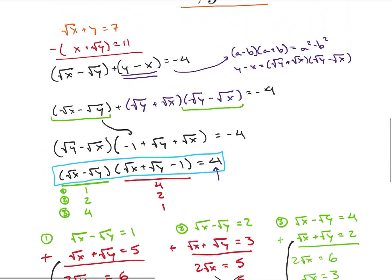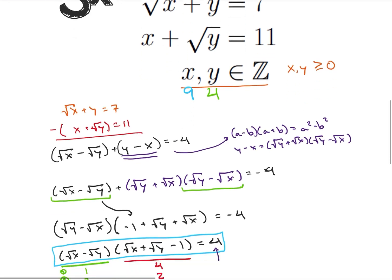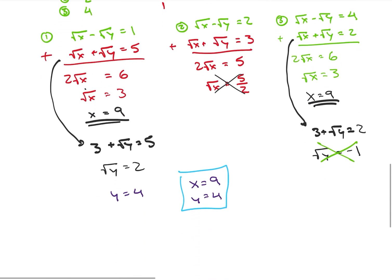Going back to our original equations and plugging in x equals 9 and y equals 4: square root of 9 is 3, plus 4 is 7. Check. And 9 plus the square root of 4, which is 2, is 11. Check. Some of you might have seen that right away, but I like to figure it out in a deliberate mathematical way. I hope you enjoyed working through this problem. Please like and subscribe, and if you have your own video idea, email it to thinkthriceproblemsolving@gmail.com. Think once, think twice, and if you really get stuck — think thrice.